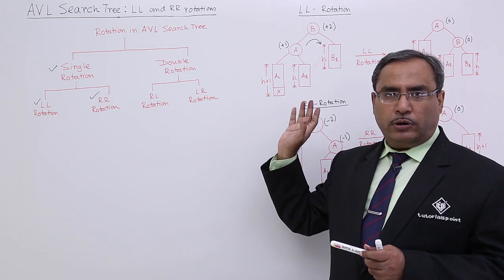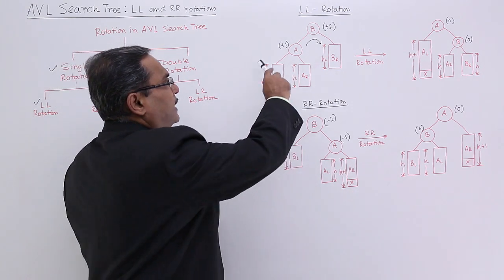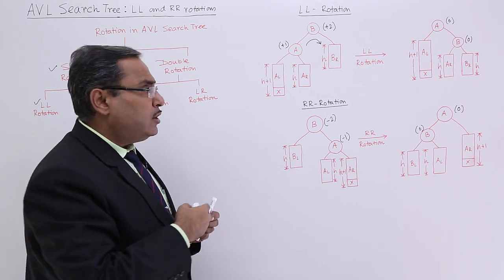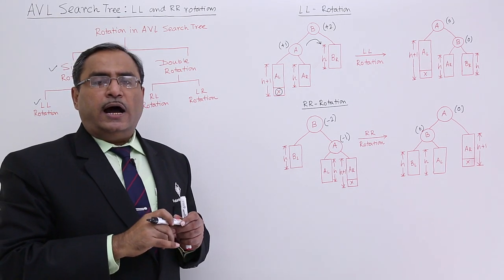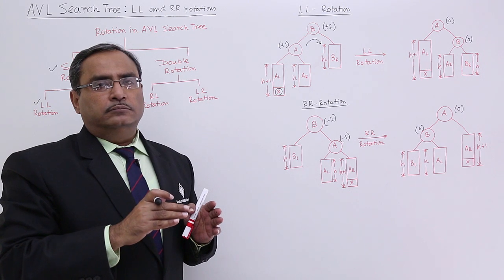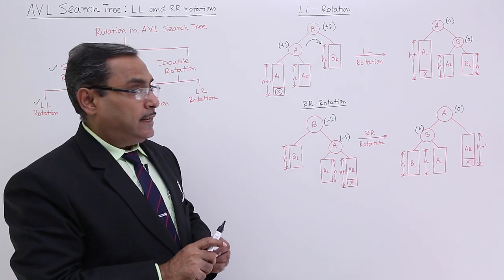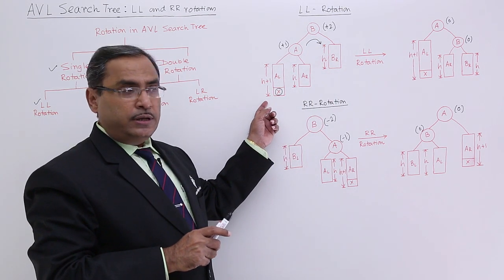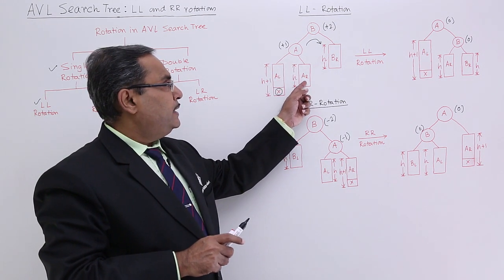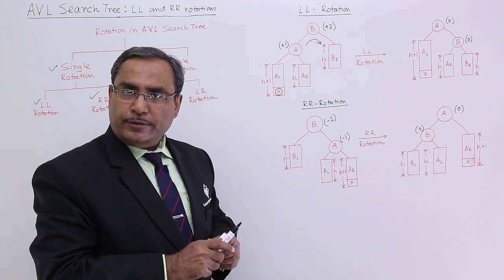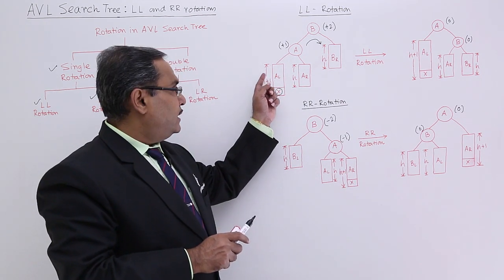For the AVL search tree, we are discussing LL and RR rotations. Let us suppose this is one AVL search tree after insertion of item x. After insertion of item x, the height-balanced tree has got some balance factors against some nodes as plus 2 or minus 2, so it has got disbalanced. AL is the A left subtree, AR means A right subtree, and BR means B right subtree. Their heights are H, H — that is why it was balanced — but one node has got inserted.